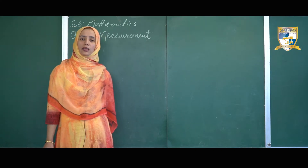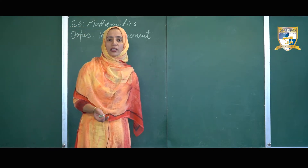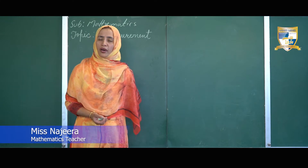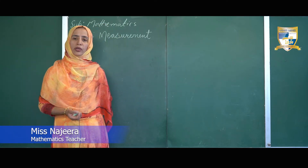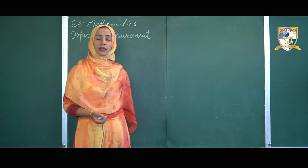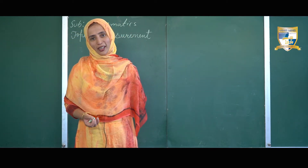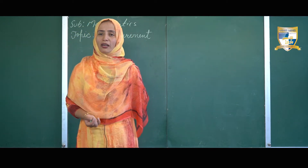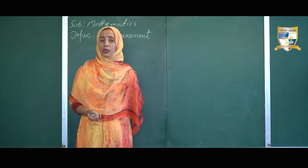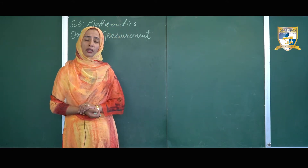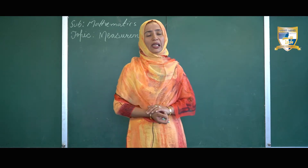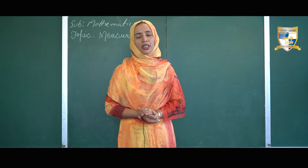Hi class, this is your mathematics teacher. In this video we are going to learn about measurement. The first question that comes to our mind is: why do we measure things, or why do we measure length? We measure things to know how long and short they are. Similarly, we measure distances between two places or points to know how far away they are from each other. For measuring distances we have different units of length like kilometers, centimeters, meters, and millimeters.